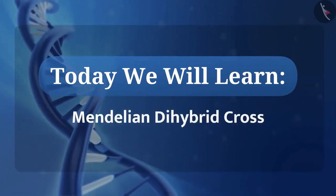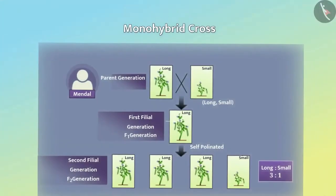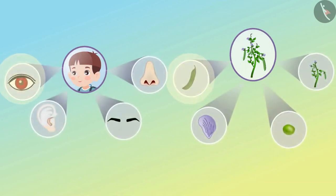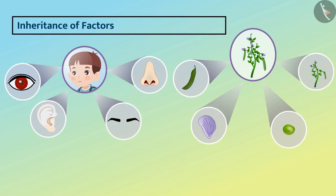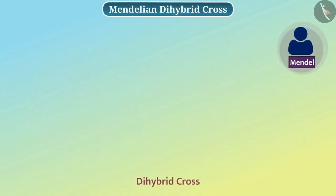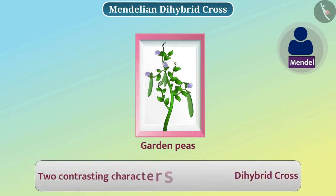Today we'll learn about Mendelian dihybrid cross. In monohybrid cross, Mendel studied the inheritance of only one trait at a time. But in an organism, many different characters are present, and the factors that control them are also different. To understand how the inheritance of these factors affects each other, Mendel performed a dihybrid cross of a garden pea plant. A cross in which two contrasting characters are studied is called a dihybrid cross.